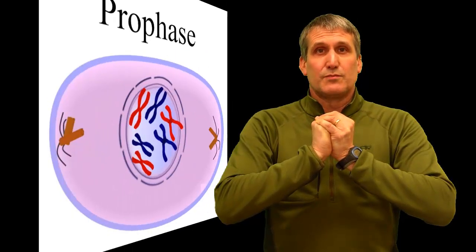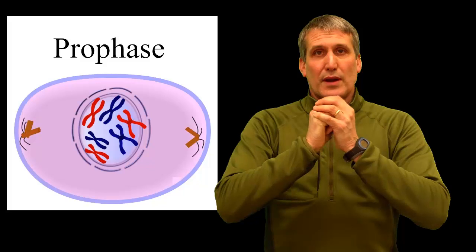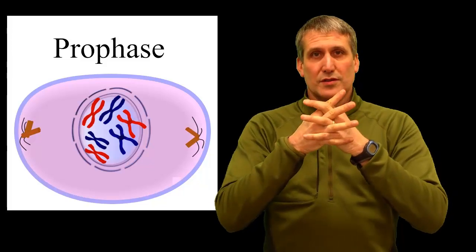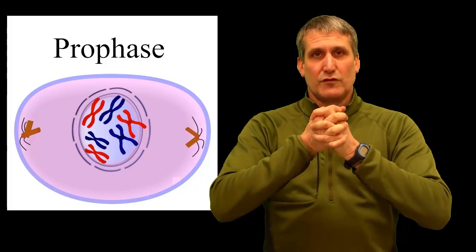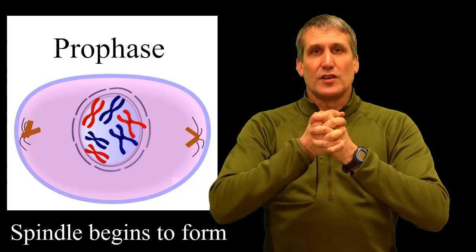During the first stage of mitosis, prophase, the nuclear membrane breaks down and the chromosomes condense, which we show with this movement. The spindle also forms.